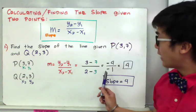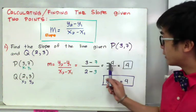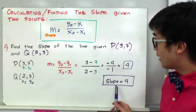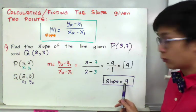And by simplifying your fraction, you'll have 4 or positive 4 as your answer because 2 negatives makes a positive. So the slope of this line, given 2 points, point P and point Q, is equal to 4.